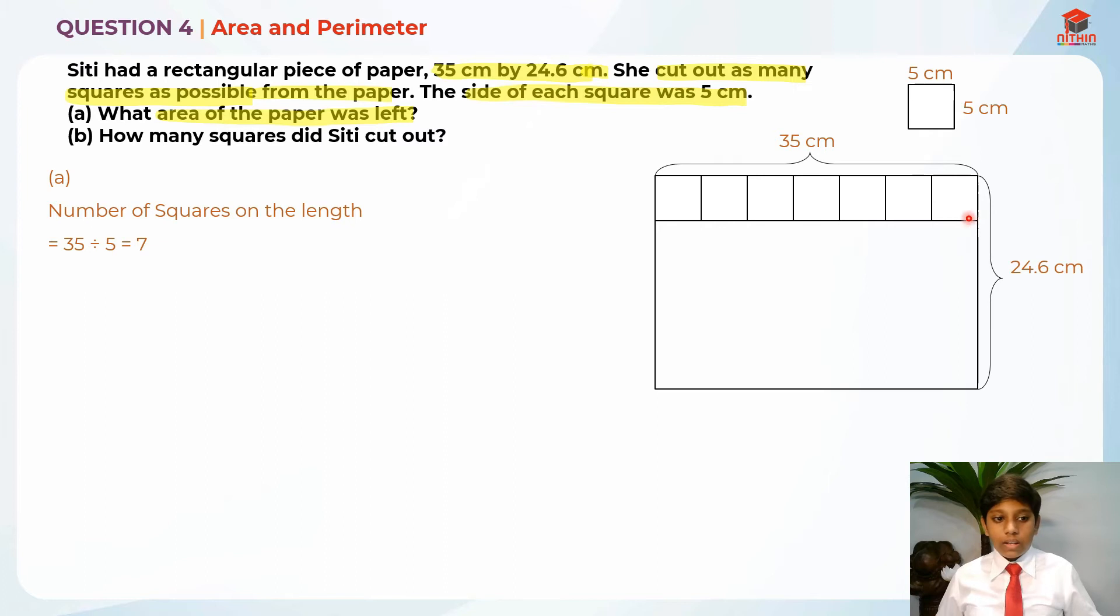After that, I'm going to find the number of squares on the breadth. So since the breadth is not a whole number, it's a whole number with a decimal, it doesn't work out. So I'm going to find the nearest multiple of 5 because it must be divisible by 5. I cannot put 25 because it's bigger than the breadth already. So I'm going to take the next lowest, which is 20.